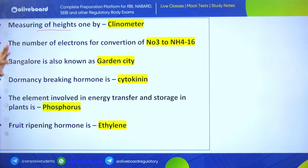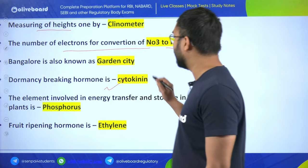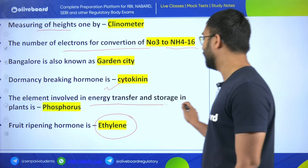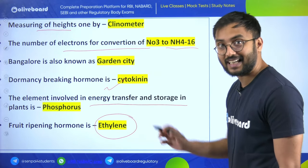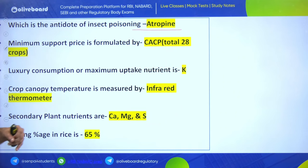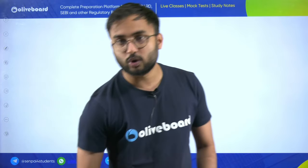Height can be measured by clinometer. Number of electrons in conversion of NO₃⁻ to NH₄⁺ is 8. Dormancy breaking hormone is cytokinin. Fruit ripening hormone is ethylene. The element involved in energy transfer and storage in plant cells is phosphorus. Antidote of insect poisoning is atropine. Minimum Support Price is formulated by CACP. Luxury consumption and maximum nutrient uptake is potassium. Secondary plant nutrients are calcium, magnesium, and sulfur. Hulling percentage in rice is 65 percent.